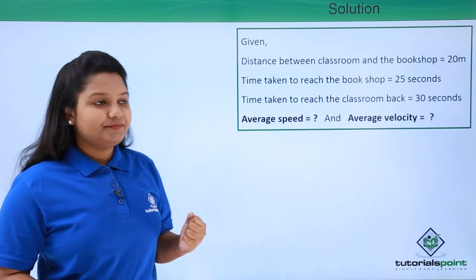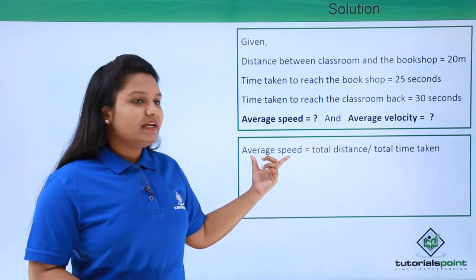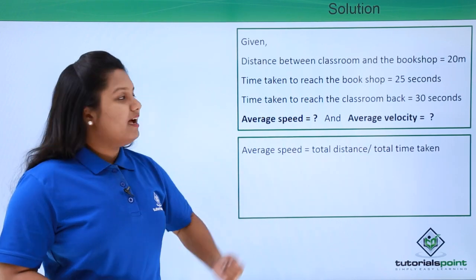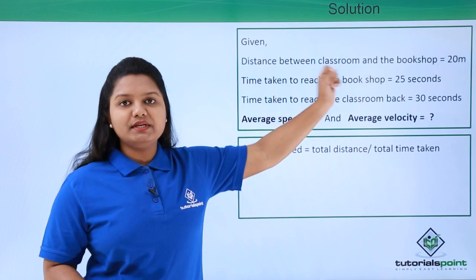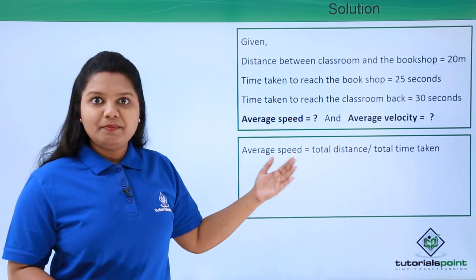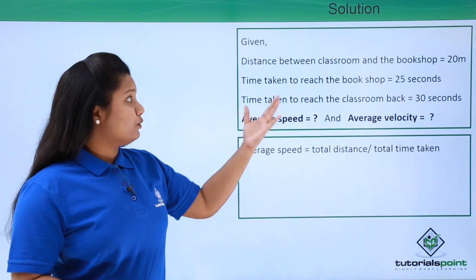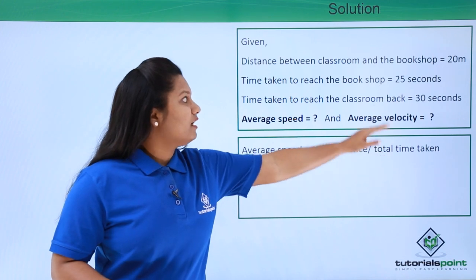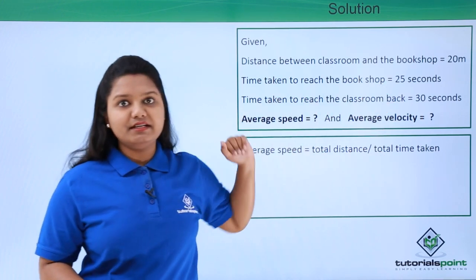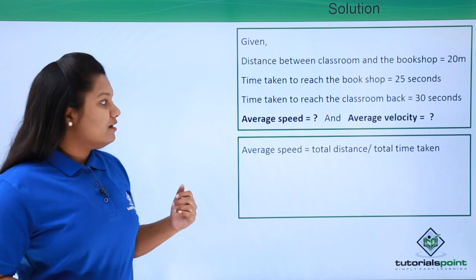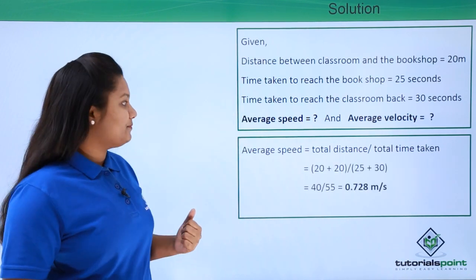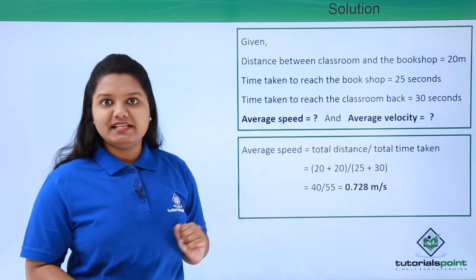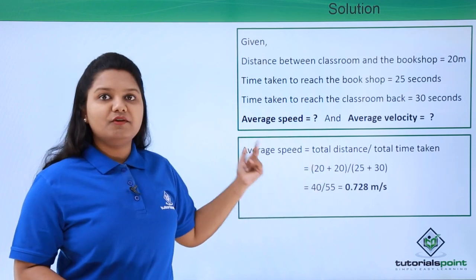Average speed is total distance divided by total time taken. The boy traveled 20 meters twice — going to the bookshop and coming back — so the total distance is 20 + 20 = 40 meters. Total time is 25 + 30 = 55 seconds. Substituting into the formula: 40 divided by 55 equals 0.728 meters per second. So this is the average speed of the boy.